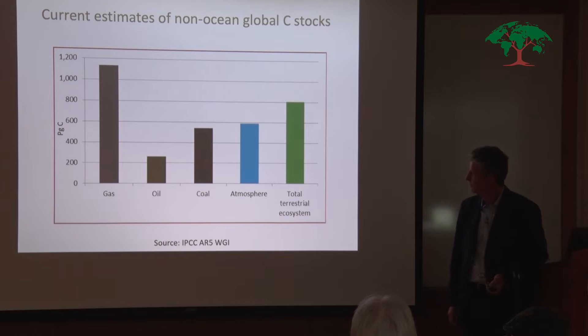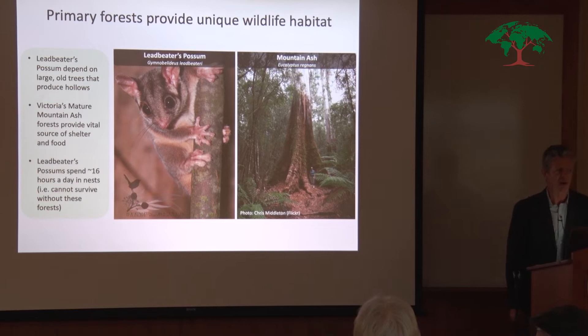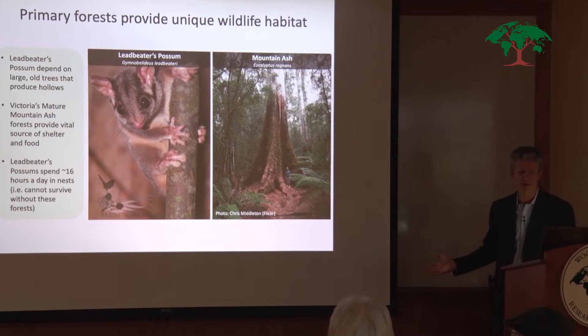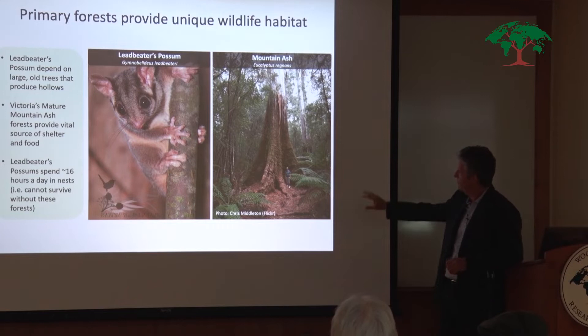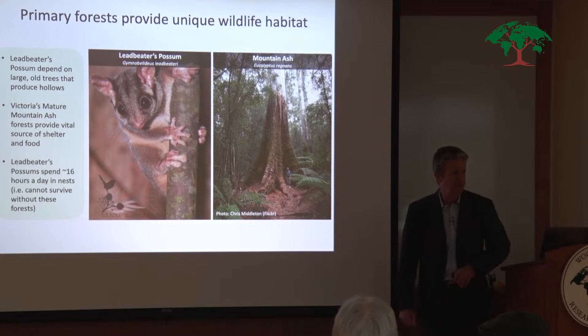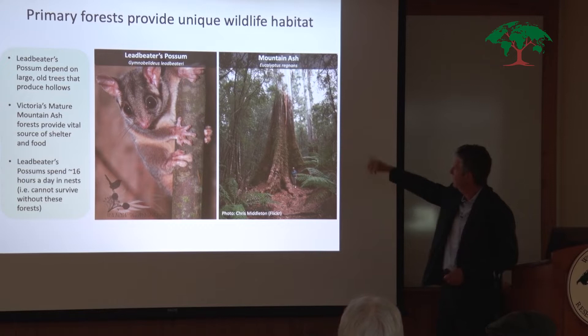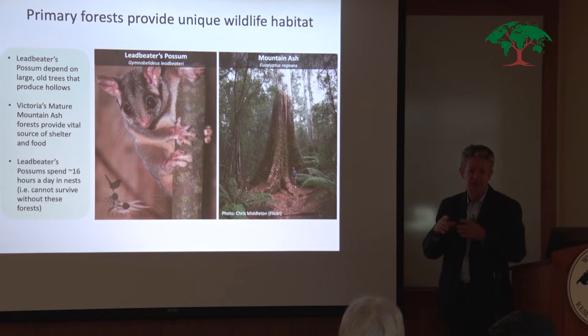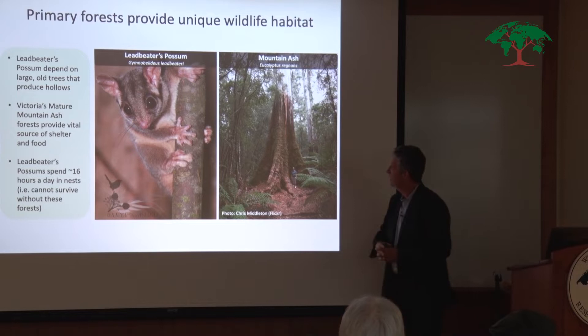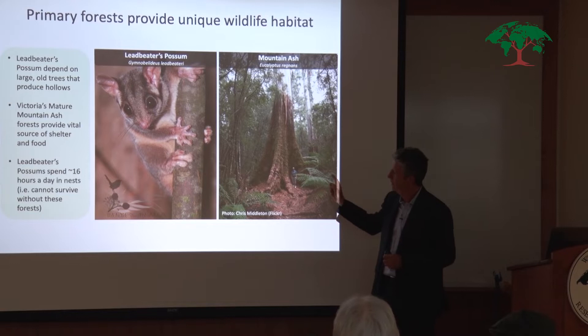Primary forests are also really important for biodiversity, providing unique wildlife habitat not found in any other forest type. An example from Australia is the mountain ash forests I showed you earlier. This is Leadbeater's possum, one of Australia's most endangered marsupial mammals. Leadbeater's possum can only survive because of large old trees. After about 150 years, trees start to hollow out through fungi and other activity, and the possum nests and shelters in those hollows — spending about 16 hours a day in there.